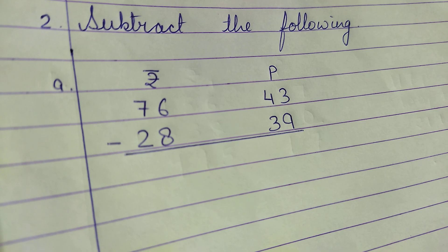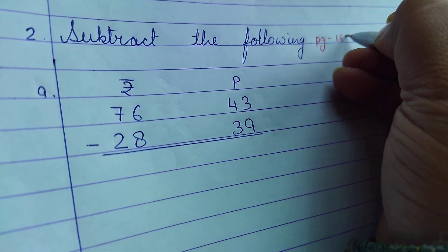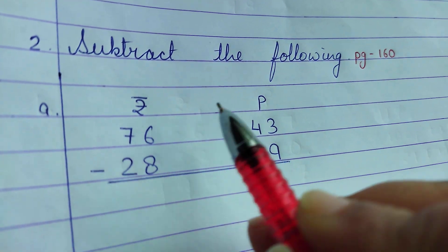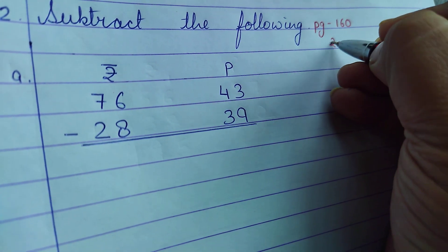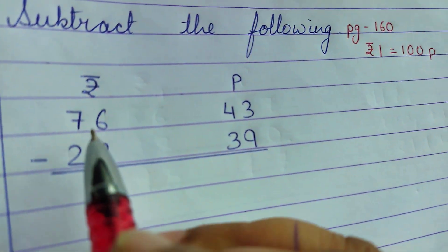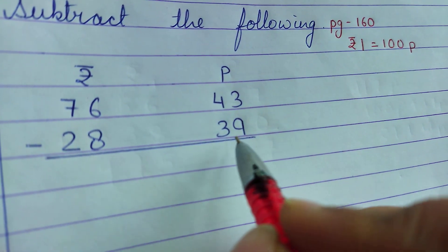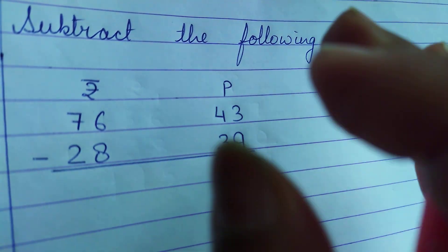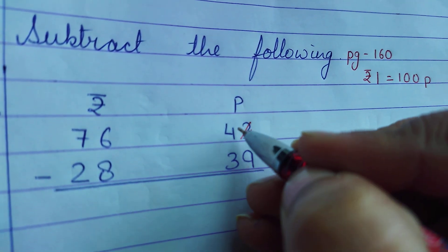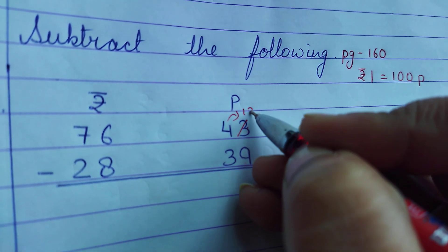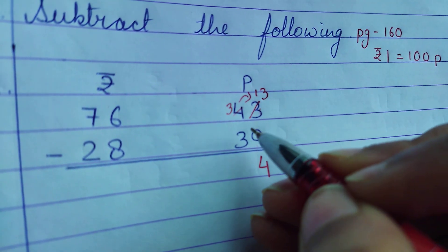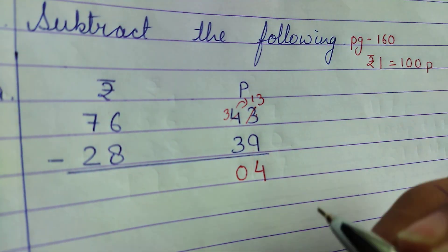The next question on page 160 is: Subtract the following. Recall the basic fact: 1 rupee equals 100 paise. Question: 76 rupees 43 paise minus 28 rupees 39 paise. Subtract paise: 3 minus 9 is not possible, so borrow — 4 becomes 3 and it becomes 13. 13 minus 9 is 4, and 3 minus 3 is 0. So the paise answer is 04.